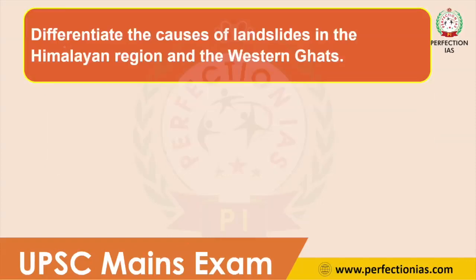The question for today is: Differentiate the causes of landslide in the Himalayan region and Western Ghats. This question carries 10 marks, so you have to write around 150 words.